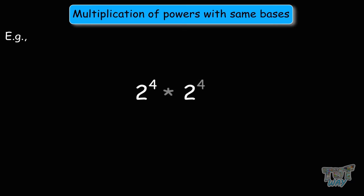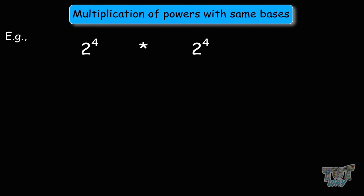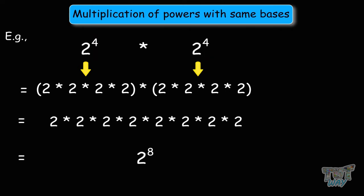Here we have our first question. We have to multiply 2 to the power of 4 with 2 to the power of 4 — that is, powers with the same bases and same exponents. 2 to the power of 4 is 2 times 2 times 2 times 2, meaning 2 multiplied by itself 4 times. So we have to multiply 2 with itself 8 times, giving us 2 raised to the power of 8. When you have the same bases and multiply the powers, you can just add the exponents.